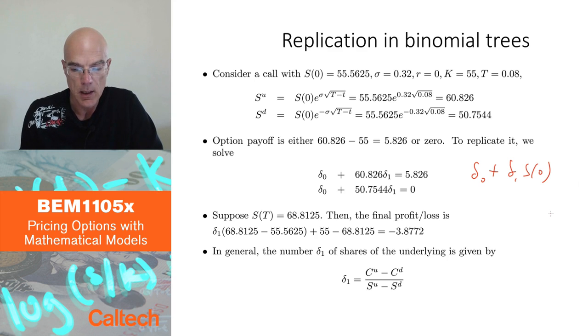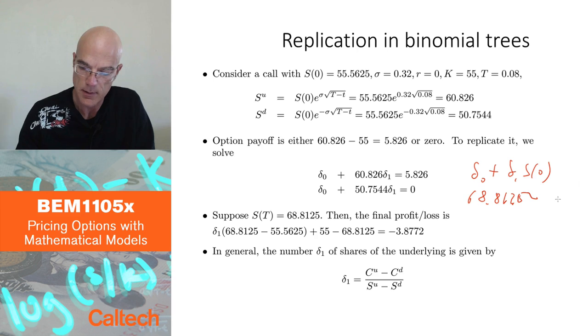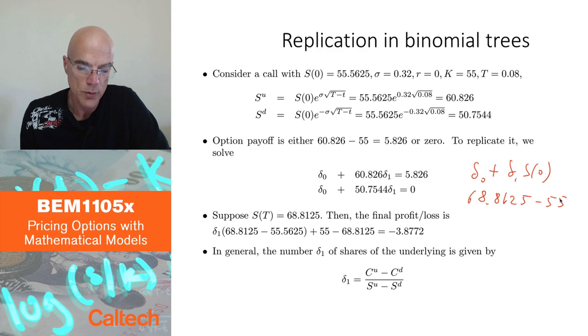So it's a loss. It's a smaller loss than not doing anything, because if you don't do anything in this case, you would lose 68.8125 minus 55, so you lose almost $14. So you do hedge somewhat, but still the loss is quite significant. And we want to do this also in the Black-Scholes model, trading more frequently, like once a day, and see whether we do better with this particular data.